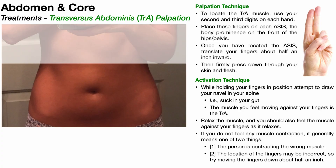In the previous video, we discussed the structure and function of the transversus abdominis muscle. This muscle is important clinically because it's often weak in sedentary individuals, those with low back pain, individuals following lumbar spine surgery, and if weak, it can lead to the development of diastasis recti following pregnancy. So it's very important to know how to teach someone to find the muscle, then activate it, and then strengthen it.